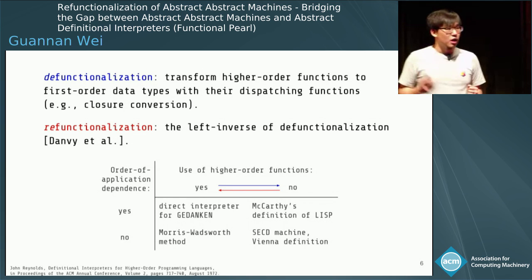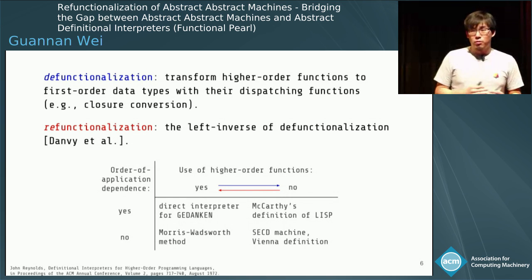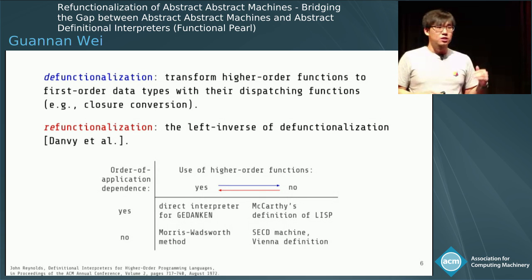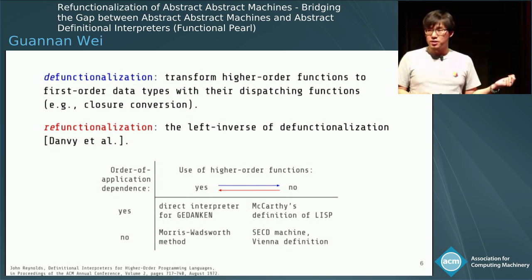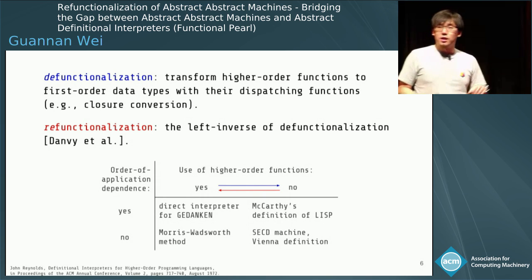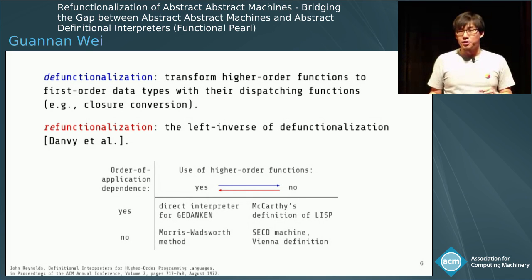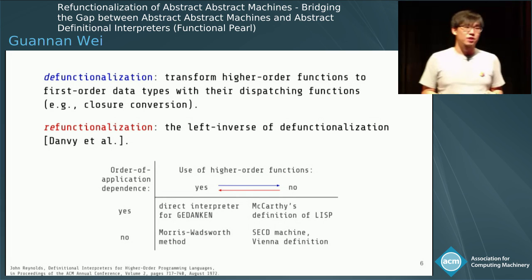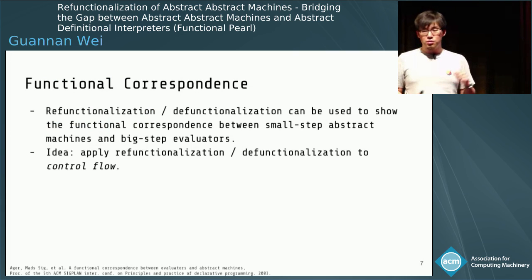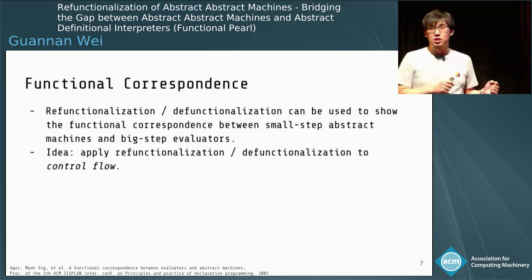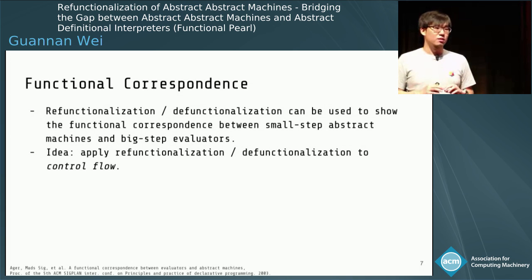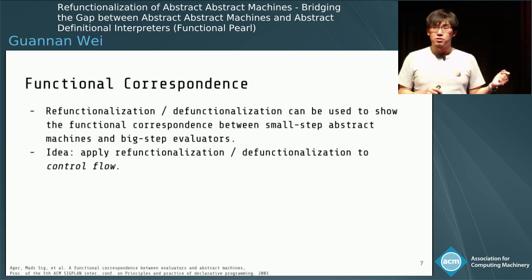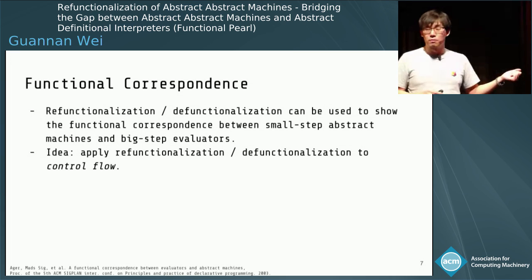Later, Oliver Danvy and many of his collaborators retraced Reynolds' approach and rediscovered a left inverse transformation of defunctionalization, called refunctionalization. The idea is to transform first order data types back to higher order functions. These two transformations can be used to construct a functional correspondence between small step abstract machines and big step evaluators — applied not only to function values or closures, but also to control flow.